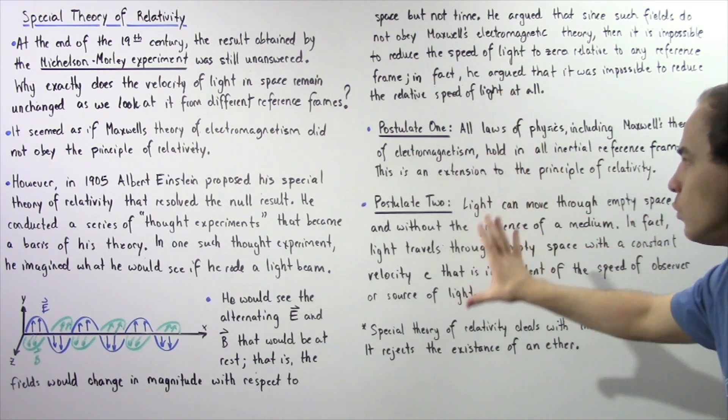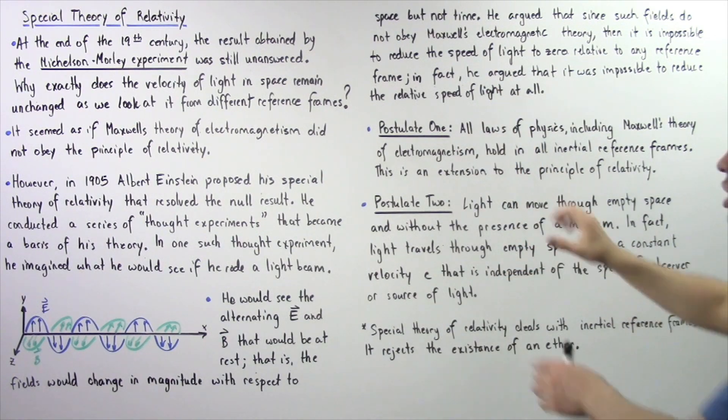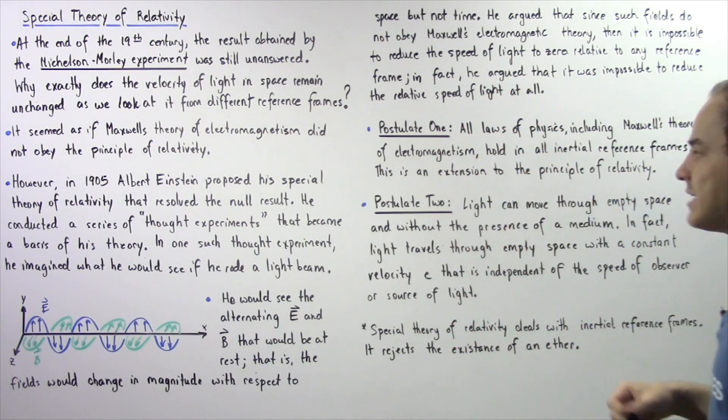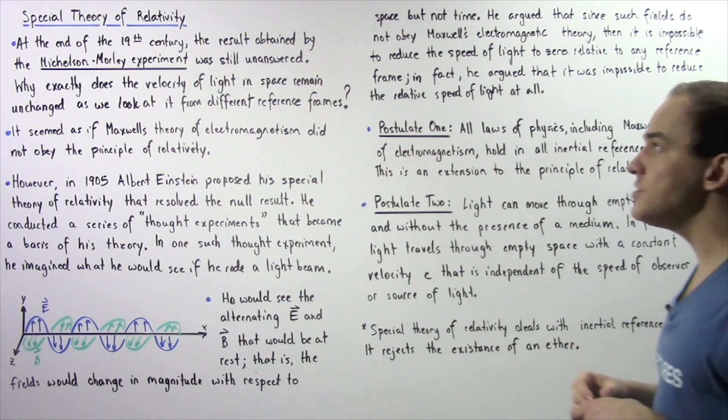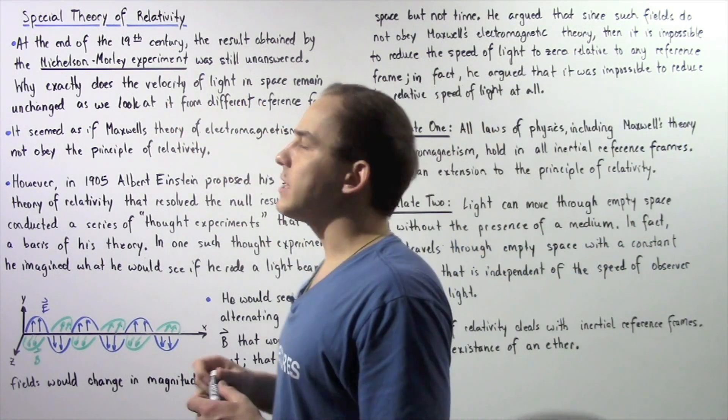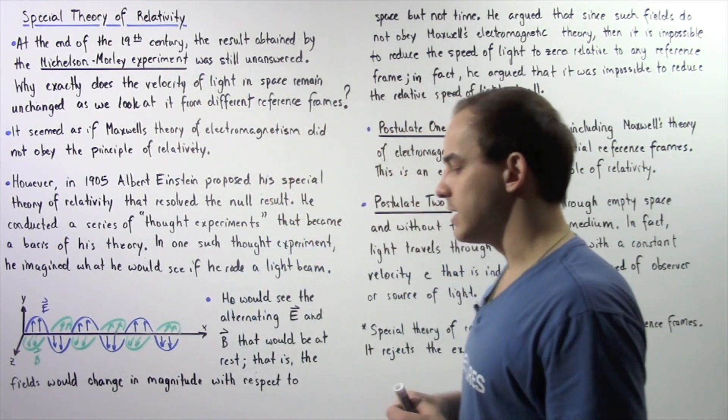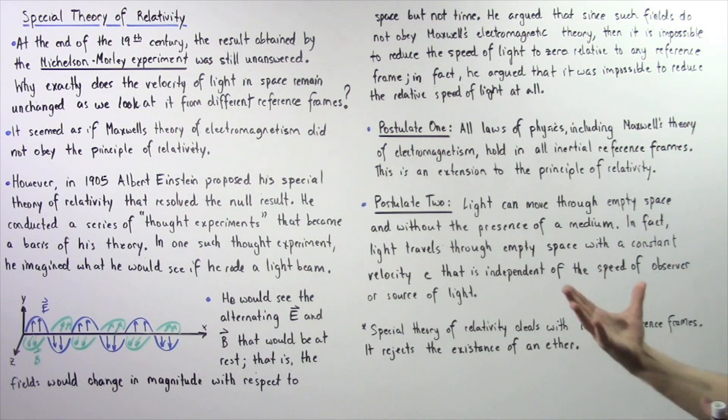And he postulated the following two important points. These two postulates essentially form the foundation of Einstein's special theory of relativity. So let's begin with postulate 1.